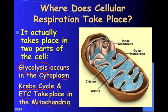If we remember back to photosynthesis, photosynthesis takes place in the chloroplasts. Those were the main energy producers in the plant cell, and in animal cells it's going to be the mitochondria. Plant cells also have mitochondria and undergo cellular respiration.